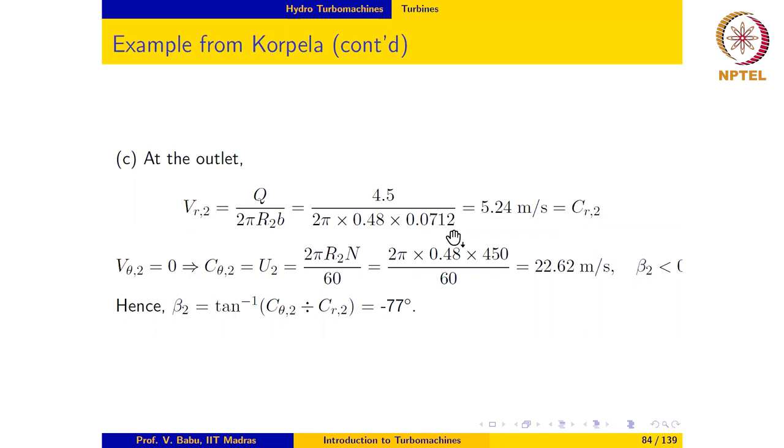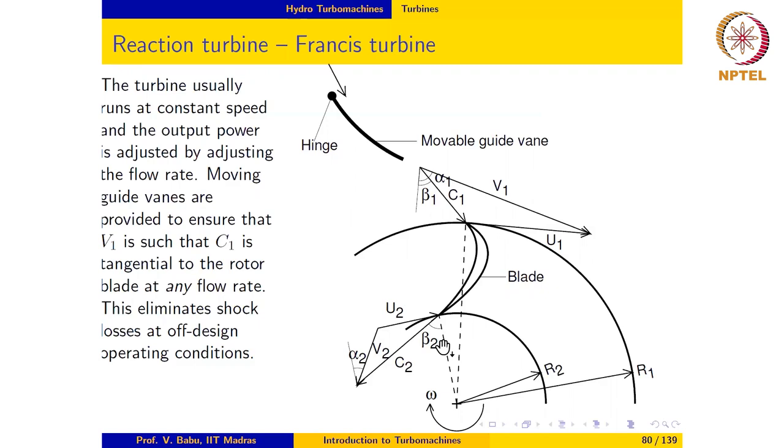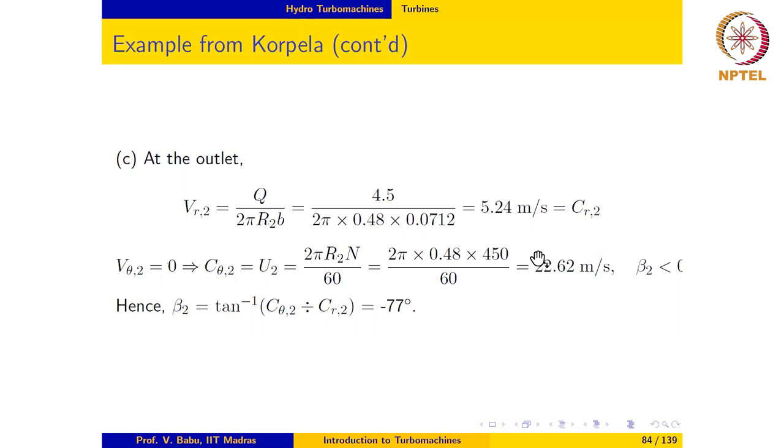Since Vθ₂ equals 0, Cθ₂ is equal to U₂ which may be evaluated to be 22.62 m/s. And as we have already noted from the velocity triangle, we expect the angle β₂ to be negative because the relative velocity vector is in a clockwise direction from the reference direction. So knowing the values of Cr₂ and Cθ₂ we may evaluate β₂ as arctan(Cθ₂/Cr₂) which gives β₂ to be -77°.